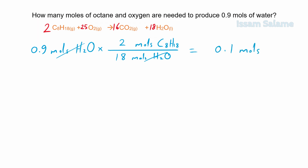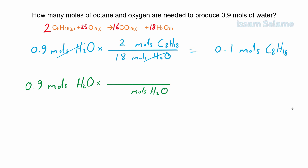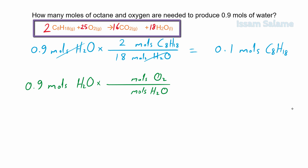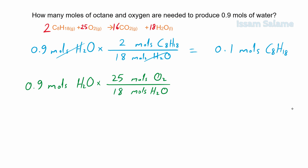For the second part, we start with the given: 0.9 moles of water multiplied by a fraction — moles of water in the denominator, moles of oxygen in the numerator. The coefficients from the balanced equation are 25 next to oxygen and 18 next to water. We cancel the matching units and the answer is 1.25 moles of oxygen.